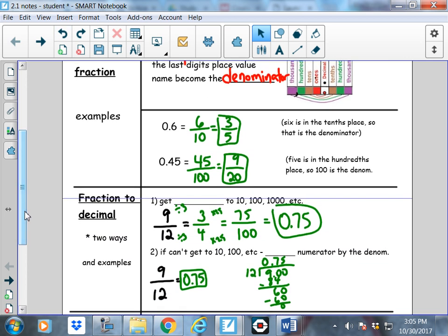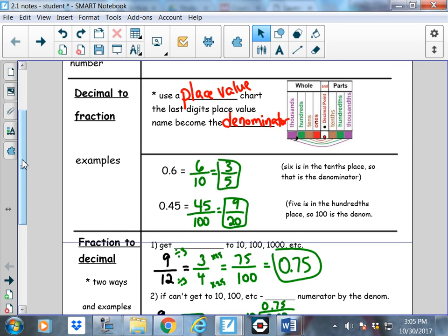So, 0.6. The proper way to say point six is six tenths. Right? Because this is one place after the decimal. You go over here. One place after the decimal is tenths. So, you would say, how many tenths do you have? I have six tenths. Well, that kind of sounds like a fraction, right? That's exactly what you're supposed to do. Say it out loud, and it'll sound like a fraction. Six tenths.